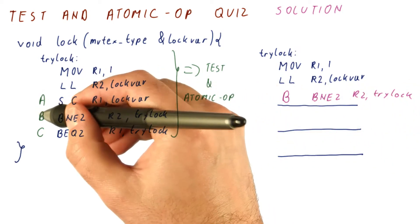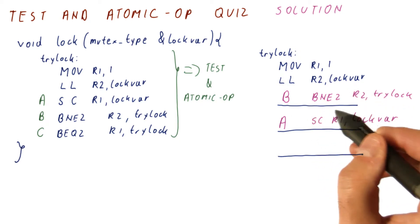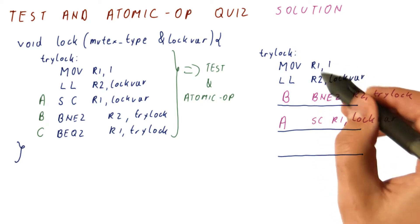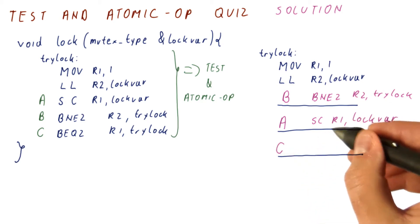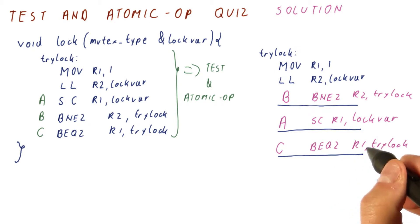Then we try to do a store conditional. So now we should use the A instruction. We have seen that the lock is free, now we try to get it. And after this we need to check, using instruction C, whether we actually got it.